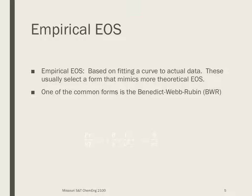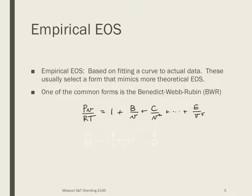The empirical equation of state is the one based on a curve fit to actual data. Generally these select a form that mimics the theoretical ones, and the one that's most well known is the Benedict-Webb-Rubin. The form for the Benedict-Webb-Rubin essentially has terms up to V to the fifth power, and the constants can be found in certain data books.